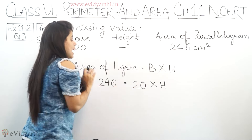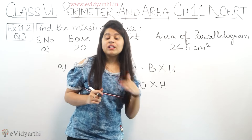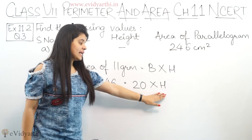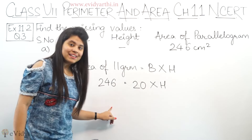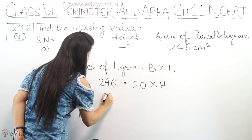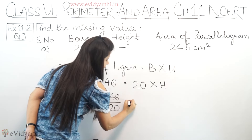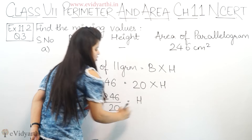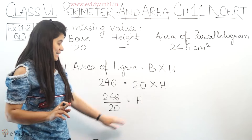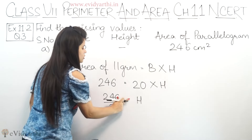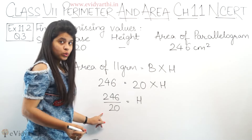We leave h as unknown. Just like in equations where we had x, we find the value of x the same way. To find h, since it is being multiplied here, it will go and divide on the other side. So it becomes 246 upon 20 equals to h. Solving this, h will come out. H is the height. You can see both will be cut by 2.